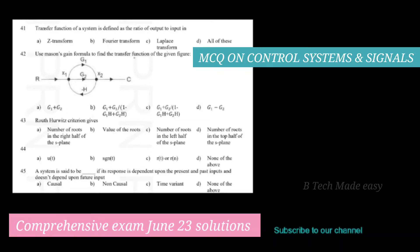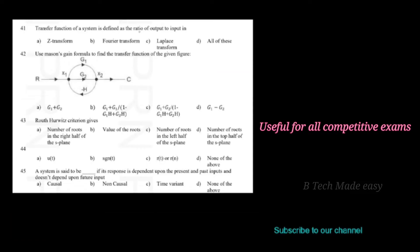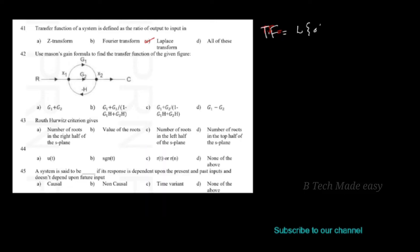The next questions are on control systems plus signals, questions 41 to 50. The first question: the transfer function of a system is defined as the ratio of output to input in which transform — Fourier transform, Laplace transform, or all of these? Transfer function is defined as the ratio of Laplace transform of output to Laplace transform of input.